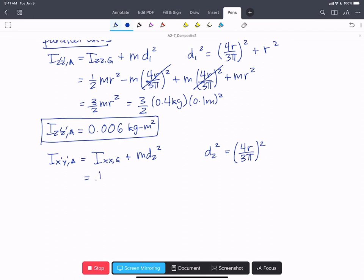We have 1/4 m r² minus m times (4r over 3π)² plus m times (4r over 3π)² all squared.